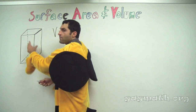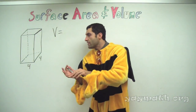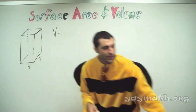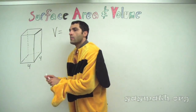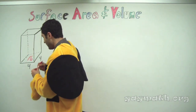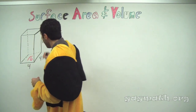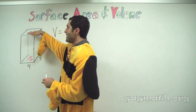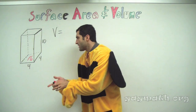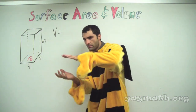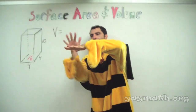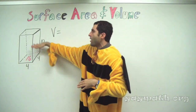Volume is the space inside. Would it make sense that we get the area of the bottom — which is 16 — and then we ask ourselves how many times we can stack the 16 up to the top? That's one face of 16 at the bottom, and then it's like: how many 16s can we stack, stack, stack, stack all the way to the top? That is all the space inside.